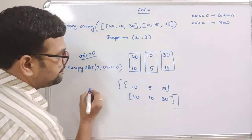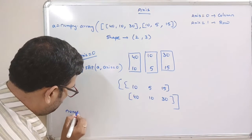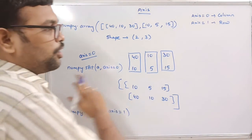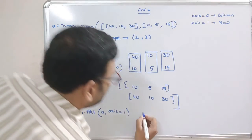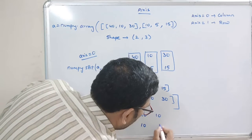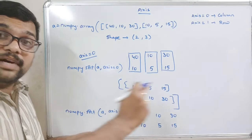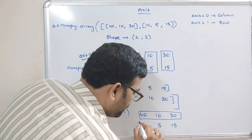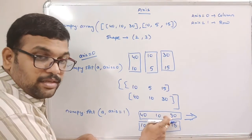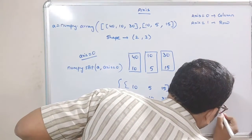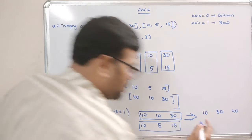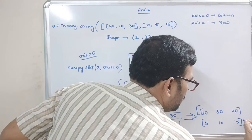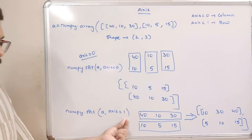If we apply numpy.sort with axis equal to one, row-wise operations are done. Each row is sorted independently. So row one — 40, 10, 30 — sorted becomes 10, 30, 40. Row two — 10, 5, 15 — sorted becomes 5, 10, 15. That is the result when you apply sort along axis one — row-wise sorting.